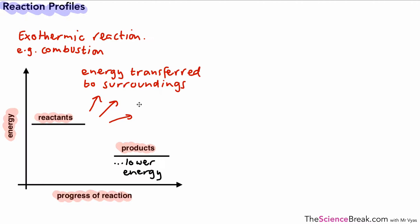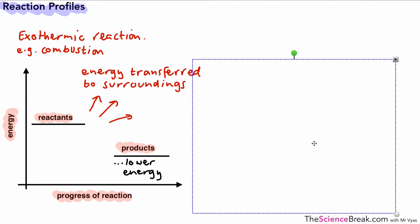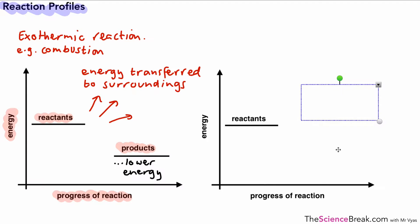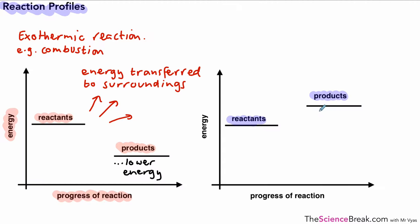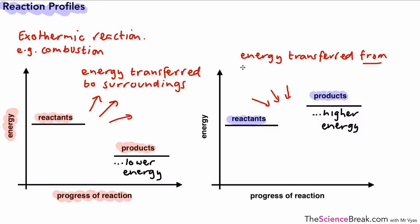Now we don't always get a reaction profile diagram that looks like that. Sometimes we have one where the reactants are actually at a lower energy level than the products — so the energy of the products is higher than that of the reactants. That means energy must have come from somewhere; in this case it's energy transferred into the reaction. So therefore we say that energy has been transferred from the surroundings. This is an example of what we call an endothermic reaction — energy transferred from the surroundings.